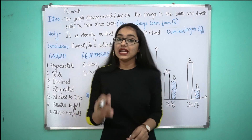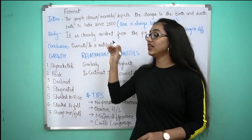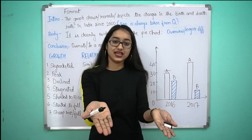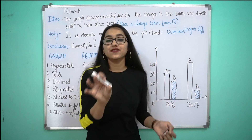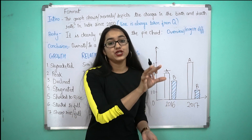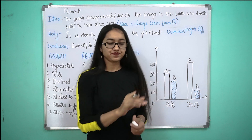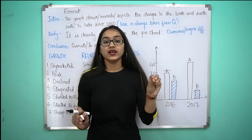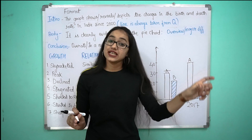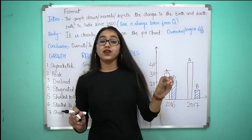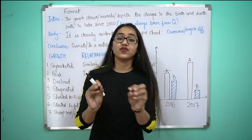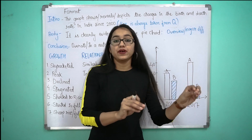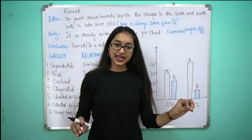तो पहली ही line में introduction की आप clearly evident कर दोगे कि यह तो हम साफ साफ देख सकते हैं। और जो भी major difference होगा उस question का वो आप दे दोगे। जैसे अगर कोई pie chart दे दिया और उसमें सबसे ज़्यादा percentage किसी एक section को है, तो आप लिख दोगे: 'It is clearly evident from the pie chart that majority of the people — dash and dash.'